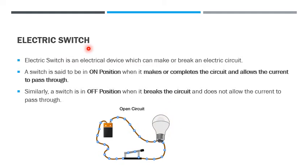The electric switch is an electric device which can make or break an electric circuit. A switch is said to be in on position when it makes or completes the circuit and allows the current to pass through it. Similarly, a switch is in off position when it breaks the circuit and does not allow the current to pass through it.